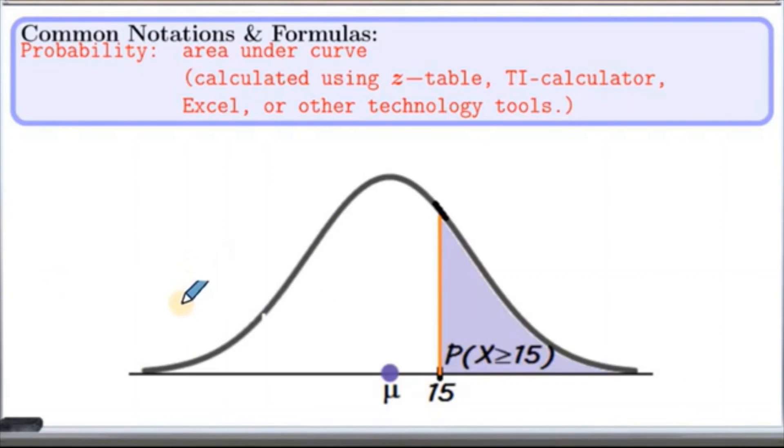Similarly, when we have to find probability of x greater than 15, then we look at the area of right to 15, like shown in a diagram here.